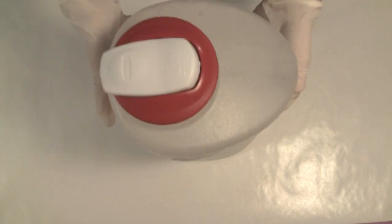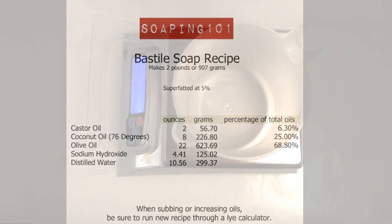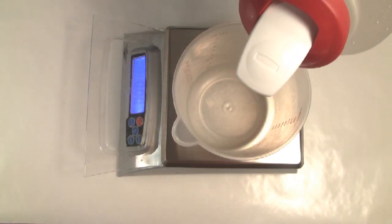To prepare 50-50 lye solution in a recipe is quite easy. Let's use our Bastille one. Our formulation calls for 4.41 ounces of lye and 10.56 ounces of water. Our pre-made lye solution is 50% water and 50% lye. To determine how much to use, we double the lye in the formula. 4.41 times 2 equals 8.82, and we'll pour this amount into our measuring cup.